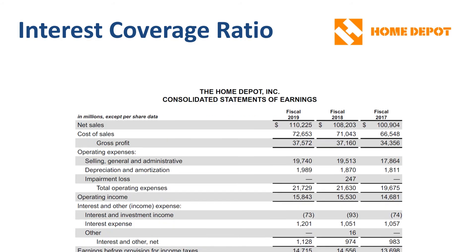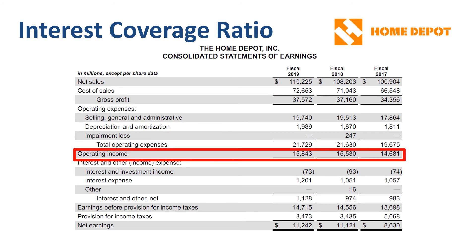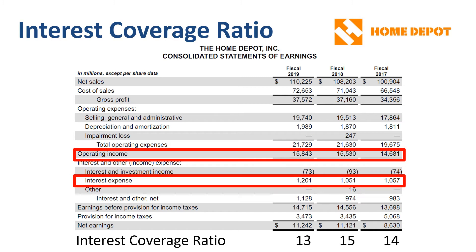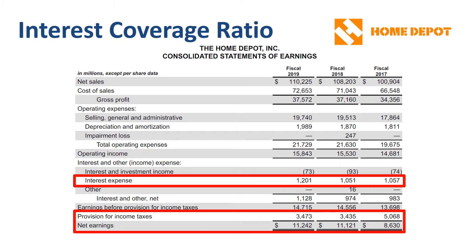Home Depot: taking the consolidated statement of earnings, we locate the lines for operating income and interest expense, then divide. The interest coverage ratio was 13 for fiscal year 2019, 15 for fiscal year 2018, and 14 for fiscal year 2017. For every dollar of interest expense, there was between $13 and $15 of operating income to easily cover it, leaving sufficient earnings to cover taxes and net income.